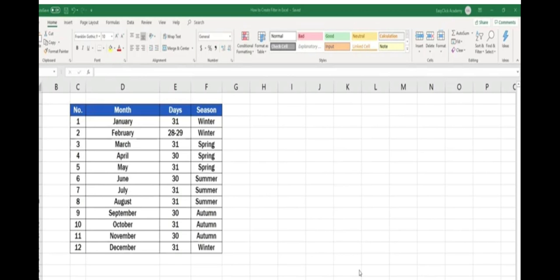You can see simple data types, so you can filter easily. Let's suppose here you can see days and season.